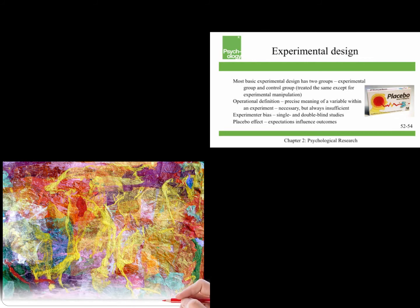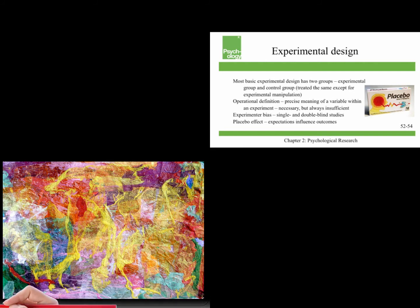Most basic experimental designs have two groups, an experimental group and a control group, and they're treated the same except for the experimental manipulation.